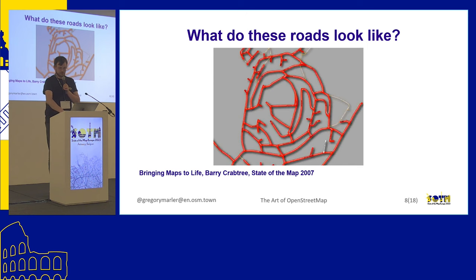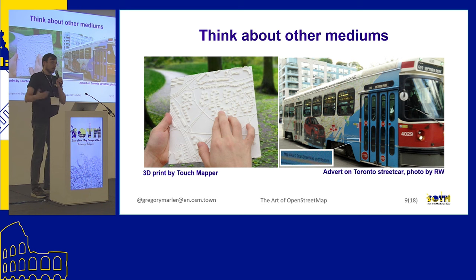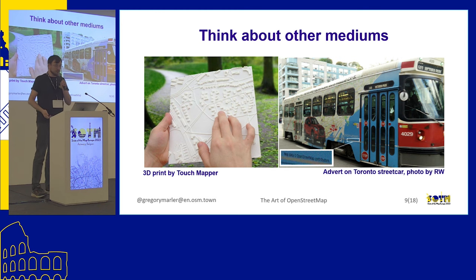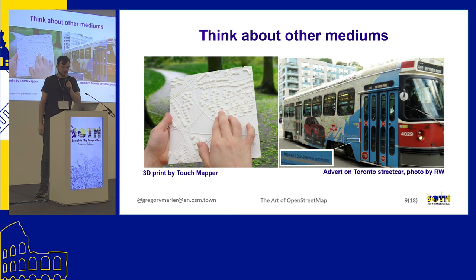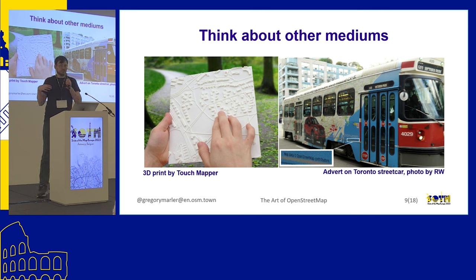We can think about other mediums as a classic way to do art. Some artists use paint, oils or watercolours, or sculptures. 3D printing is now easy and people have printers, so you could just put a map file into a 3D printer. You could put a map on a tram, a streetcar in Toronto - that's kind of fun. They're cool, but they're still functional - one to sell you a car and the other to help people with visual impairments.